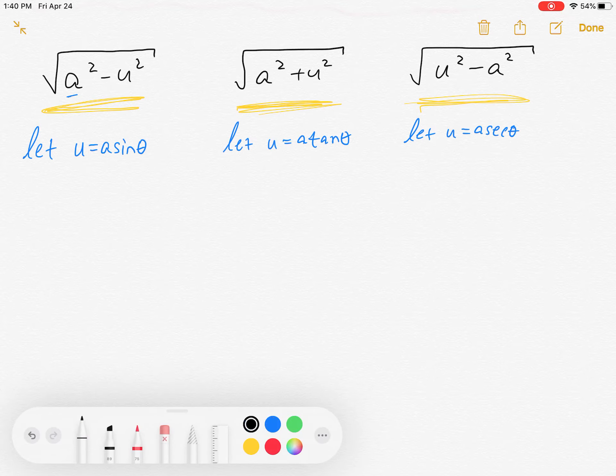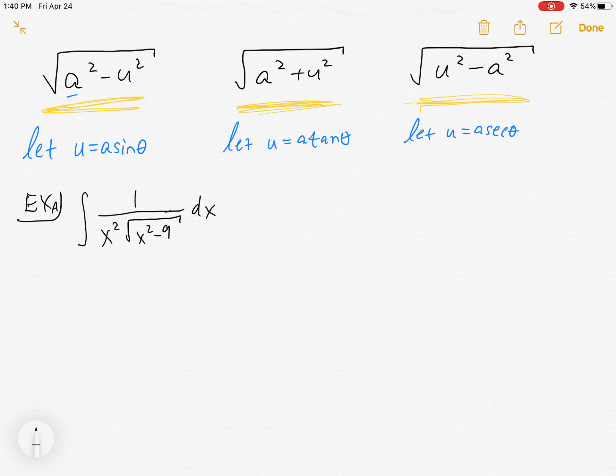So I have examples. I'm going to do the first two which are short and then maybe medium, and then we have two long ones. We'll probably get the short and medium one done in this video. The first one we'll call example A is the integral of 1 over x squared times square root of x squared minus 9, dx.